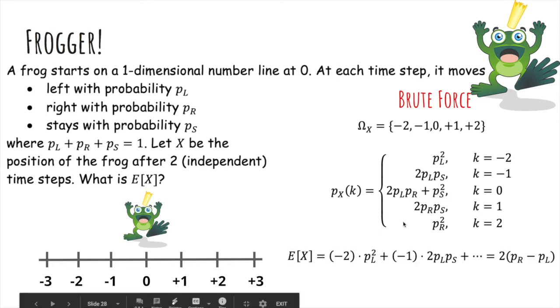So the expected value of x is the sum of each value times its probability, so negative 2 times PL squared, plus negative 1 times this, and so on. And you turn out to get this number here.